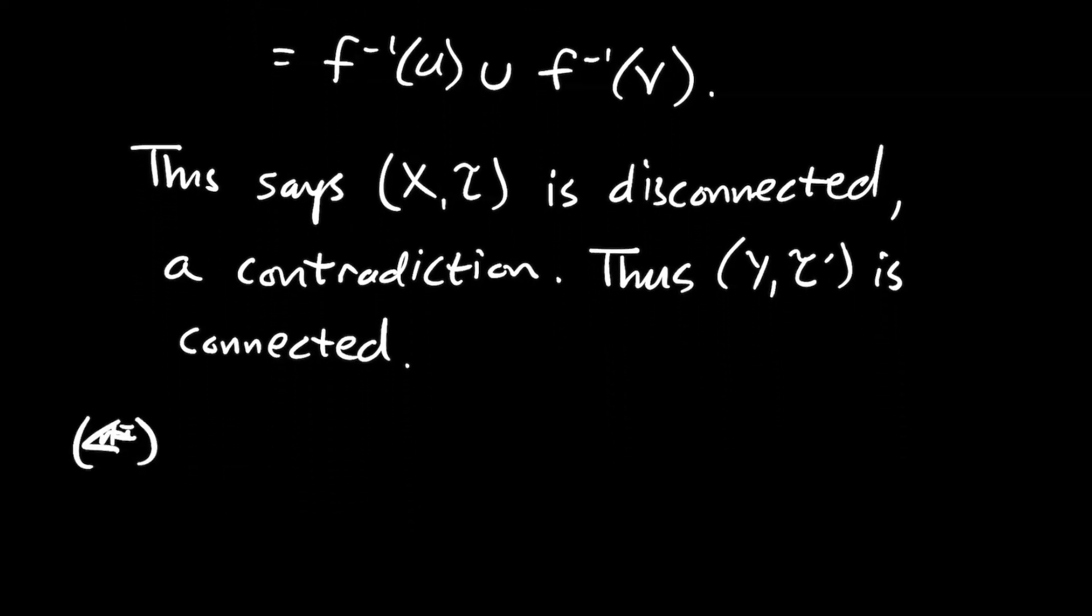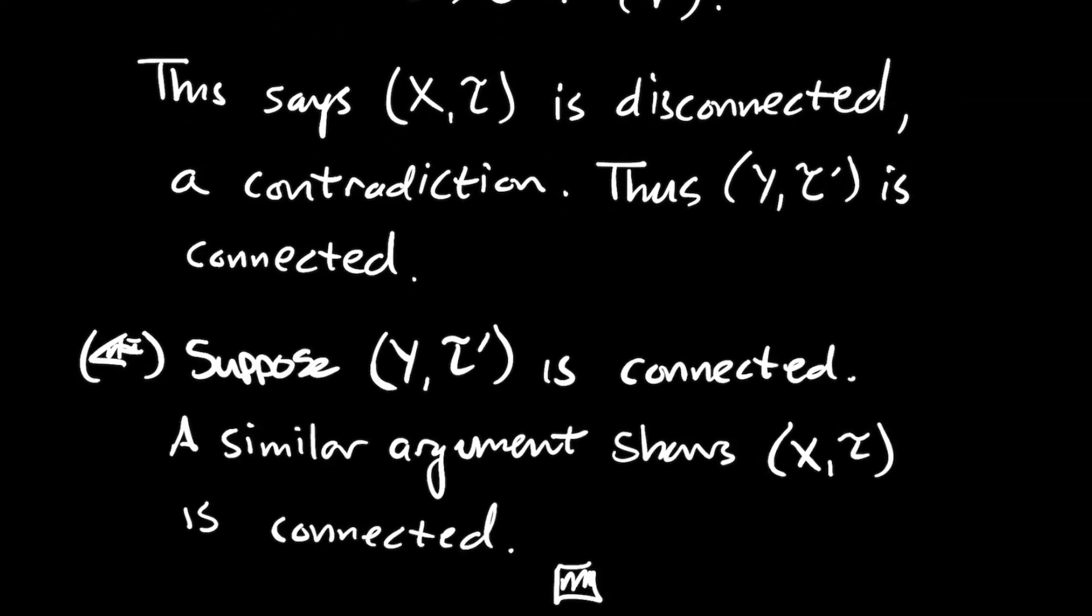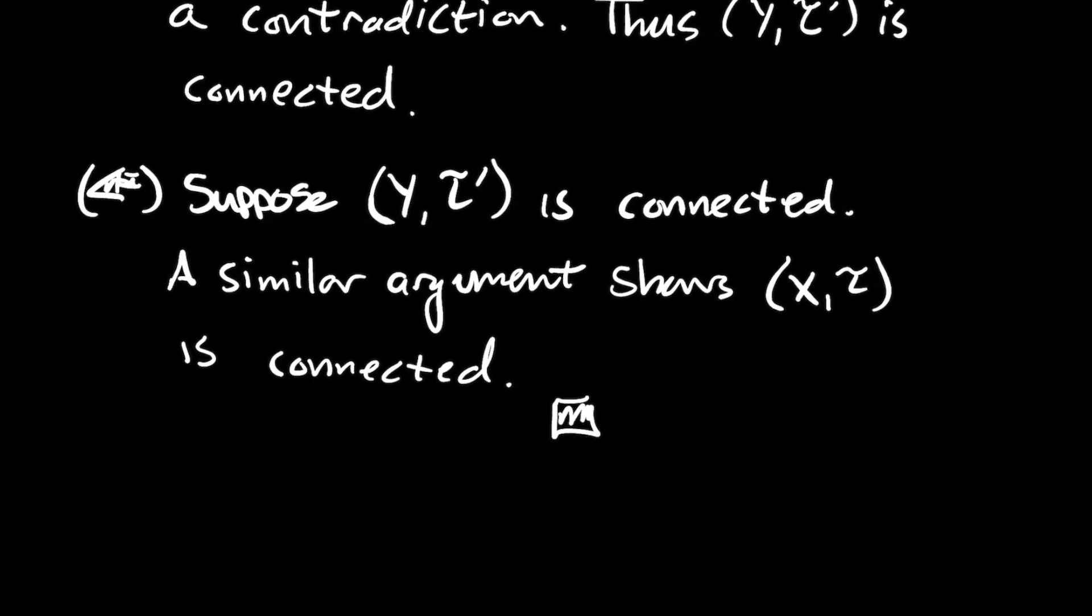If you go the other direction, it's really just the same argument. You might just utilize, say, the inverse function that you're guaranteed because F is a homeomorphism in order to get there. So a similar argument would show that (X,T) is connected when you suppose that Y with its topology T prime is connected.